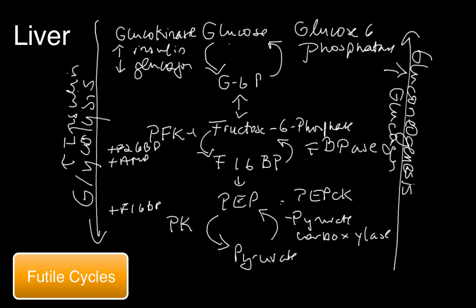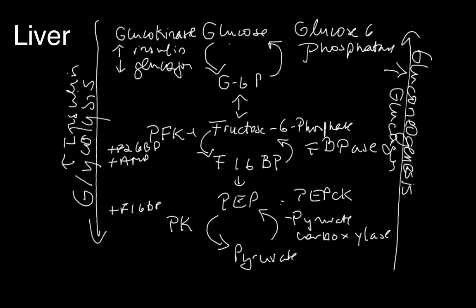This occurs in the liver, and the reason why it's so complicated is that the liver is capable of not only glycolysis in the fed state, but also gluconeogenesis. A futile cycle is something that could happen if there wasn't proper regulation.